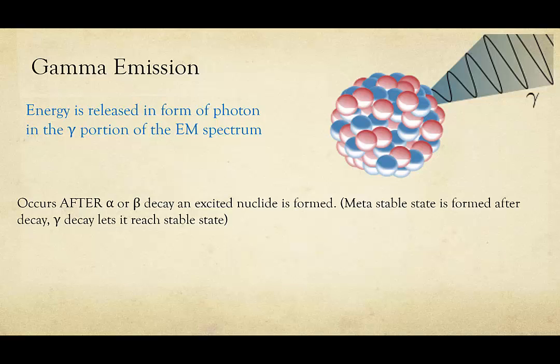This generally occurs after another decay process. So an alpha or beta decay will occur, and this will create a metastable nuclei, or in other words, a nuclei that is in an excited state due to the previous decay process.